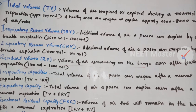Residual volume, RV, is the volume of air remaining in the lungs even after a forcible expiration. This volume of air stays increased in the lungs. Residual volume is 1100 to 1200 ml.